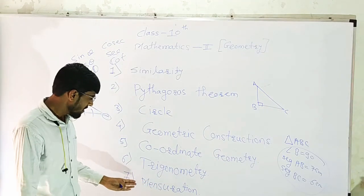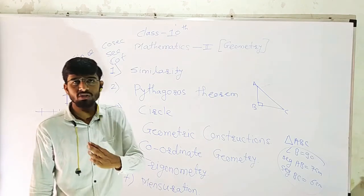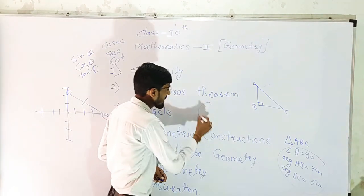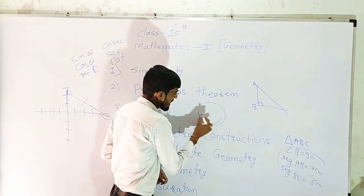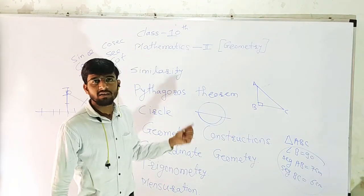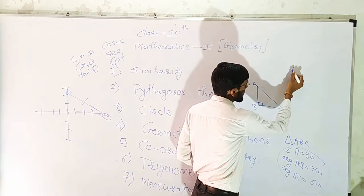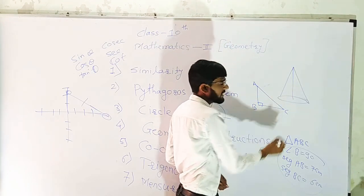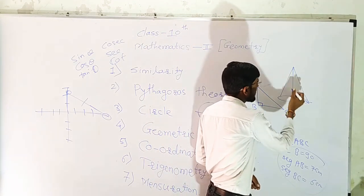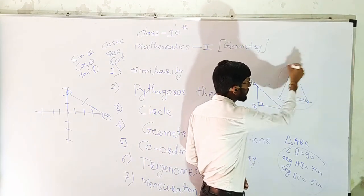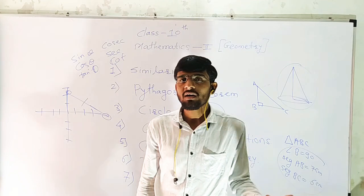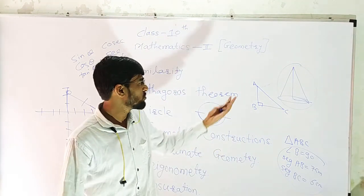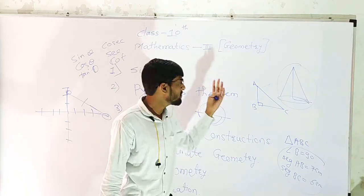Next is the mensuration. Mensuration means you have a circle. The circle has an arc. We cover the radius of the circle — the circle is written in a circle.